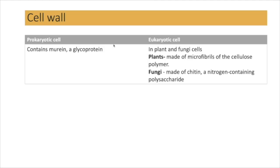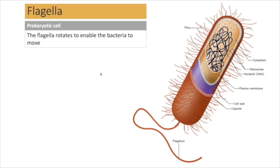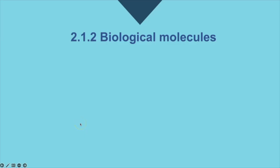Prokaryotes have a cell wall made of the glycoprotein murein. The capsule — present in only some bacteria — is a slimy protein layer on the outside that prevents the bacteria from drying out (desiccating) and helps cover antigens, making it harder for the host's immune system to detect the bacteria. The flagellum, which some bacteria have (one, multiple, or none), rotates and its function is to move the bacterium.